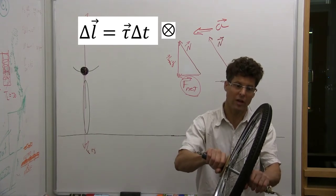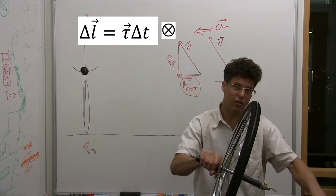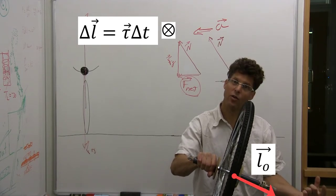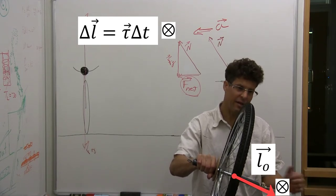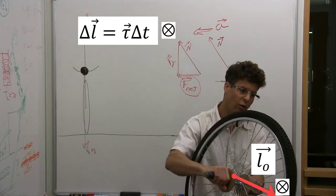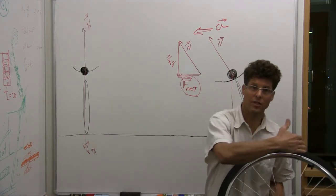So if the front wheel has an angular momentum in this direction, and you add an angular impulse from the torque of gravity in this direction, the wheel rotates and accelerates you into the turn.